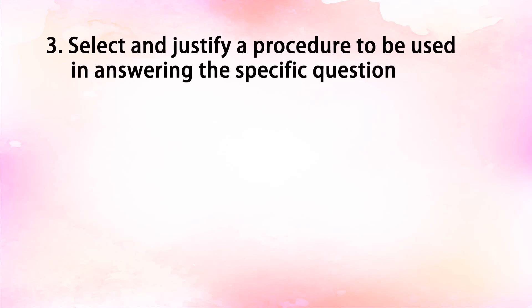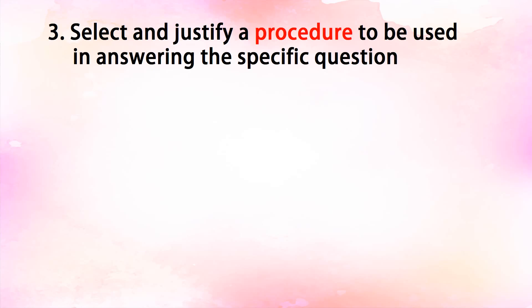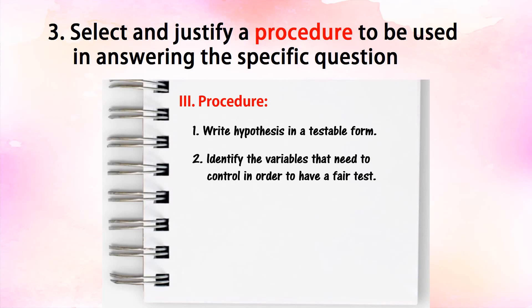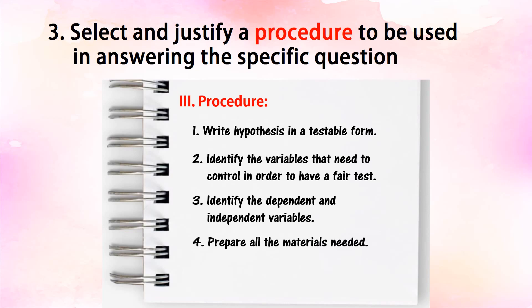The number three component is to select and justify a procedure to be used in answering the specific question. In this step, you will formulate procedures for your actual experiment. For example: Procedure 1, write the hypothesis in a testable form. Procedure 2, identify the variables that need to be controlled in order to have a fair test. Procedure 3, identify the dependent and independent variables. Procedure 4, prepare all the materials needed. Procedure 5, make experimental and controlled setup, and so on.